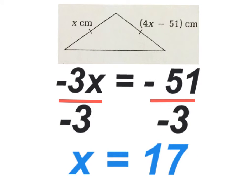Finally, my last step, I have to undo multiplying by negative 3 here by dividing both sides by negative 3. Negative 3 divided by negative 3 gives me positive 1 or simply 1x. And over here, I have negative 51 divided by negative 3, which gives me positive 17. So x is equal to 17 is the answer to this equation.